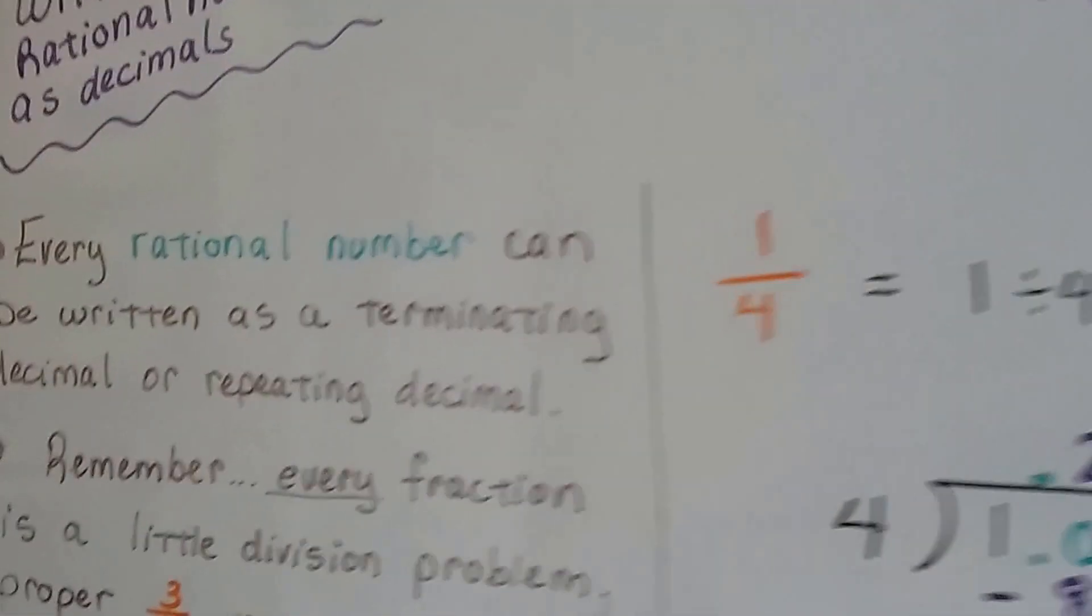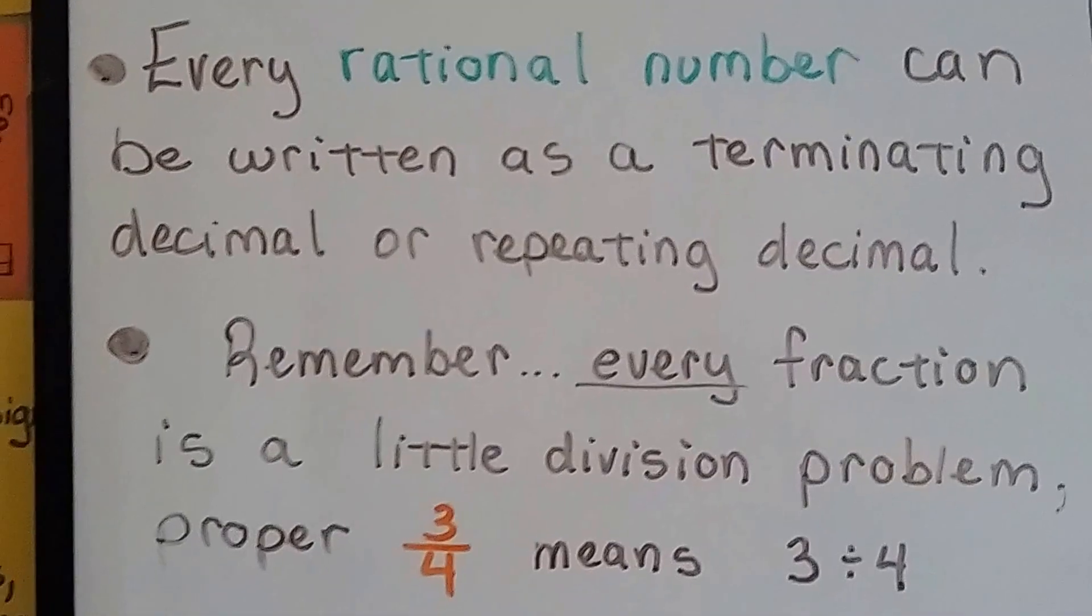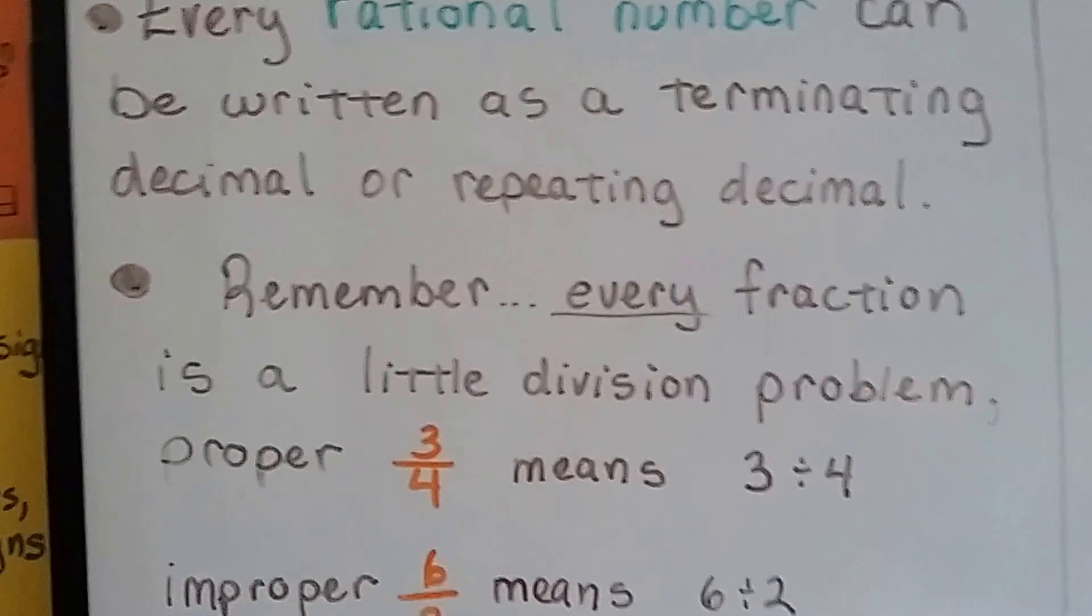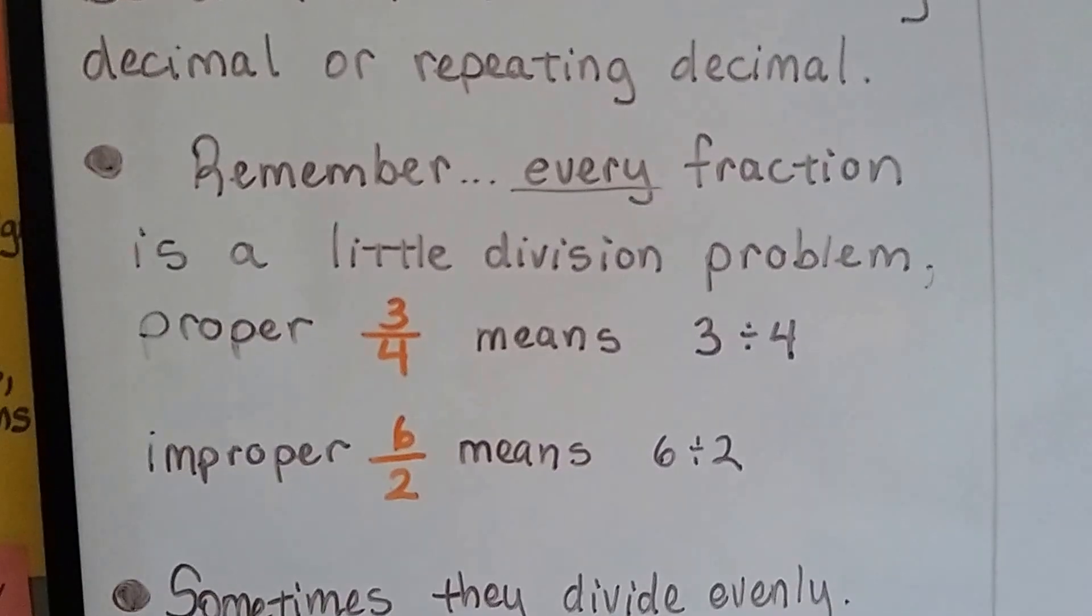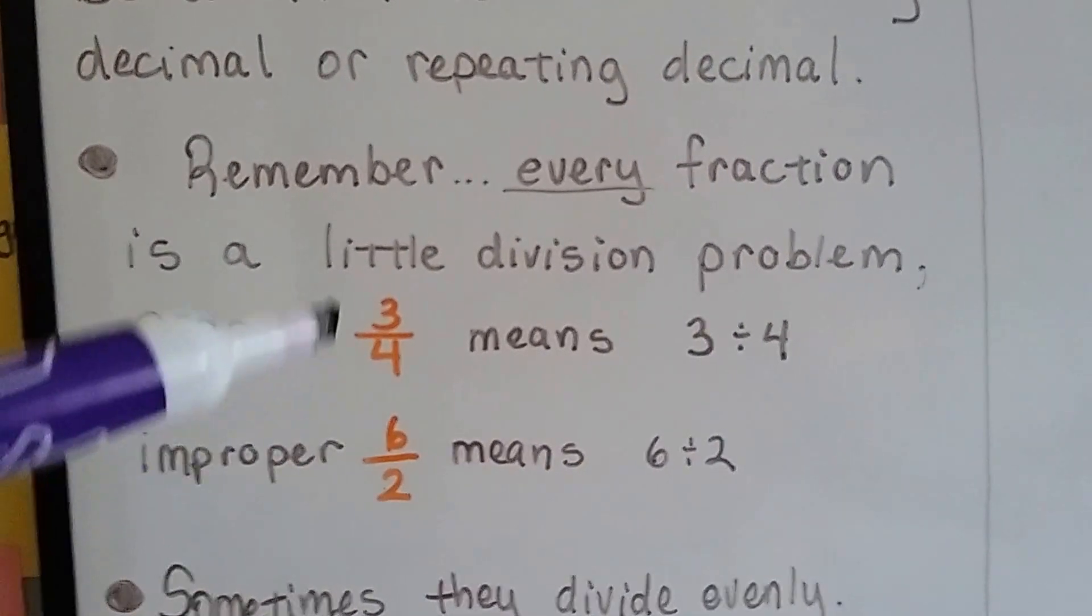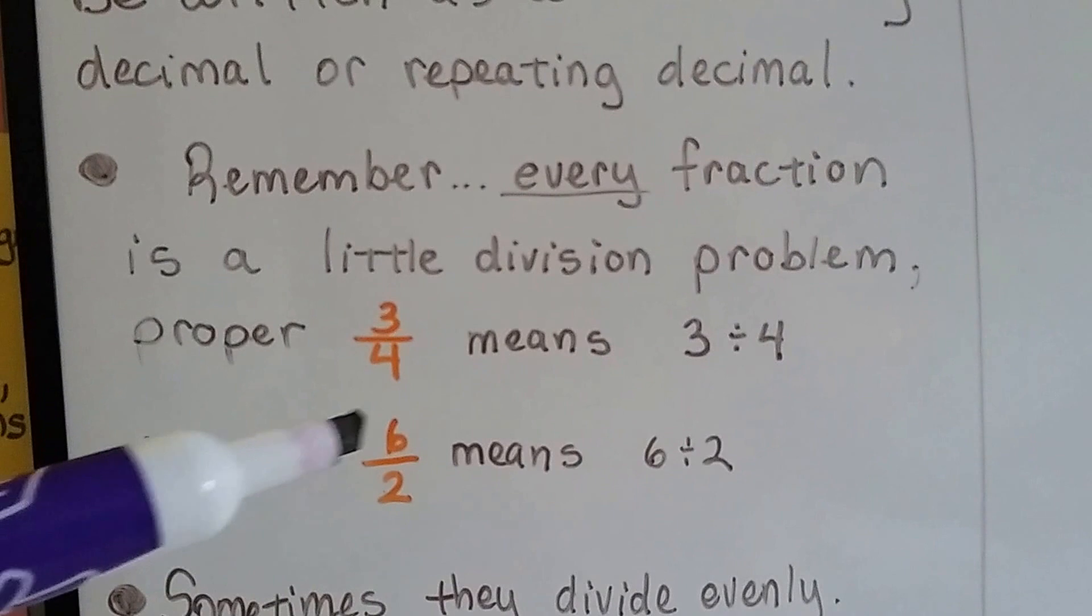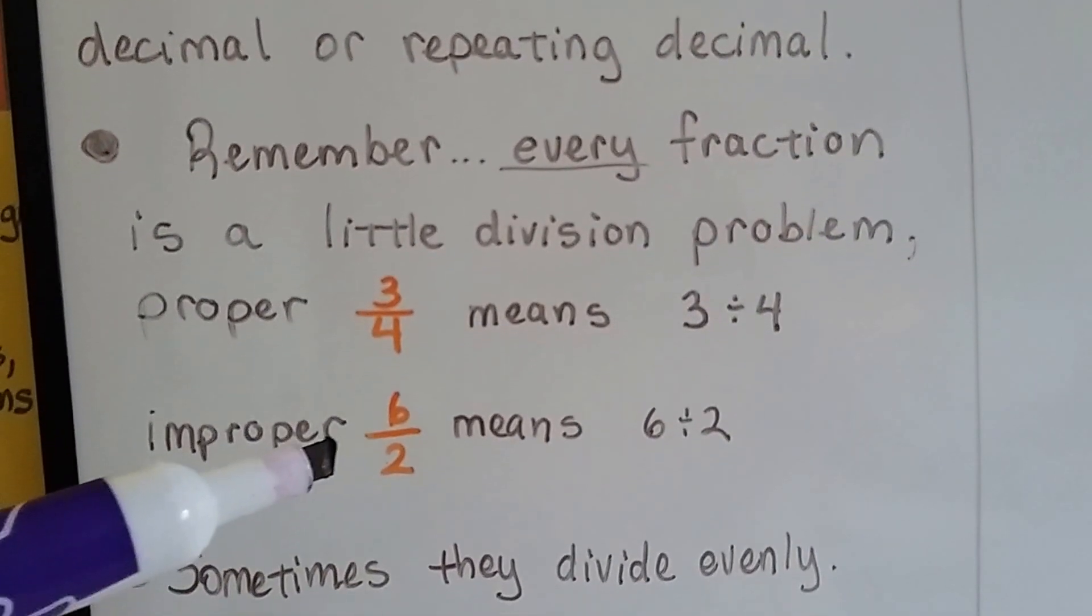Every rational number can be written as a terminating decimal or repeating decimal. Remember, every fraction is a little division problem. A proper fraction like 3/4 means 3 divided by 4, and an improper fraction like 6/2 means 6 divided by 2.